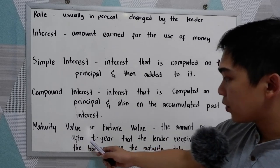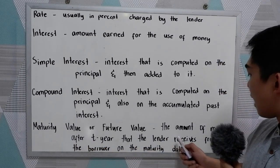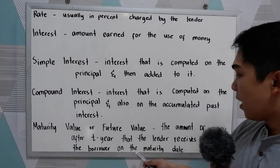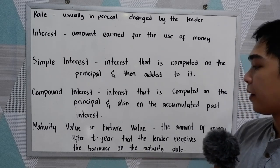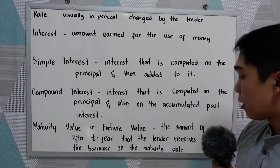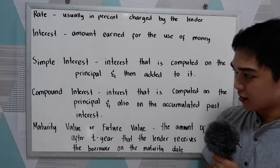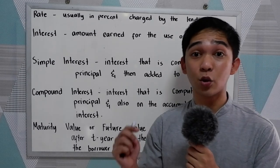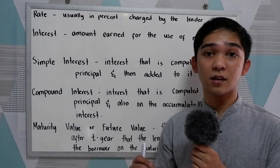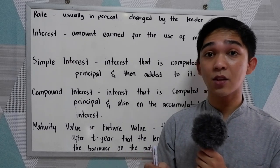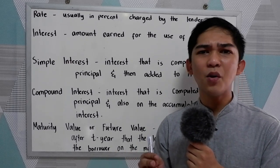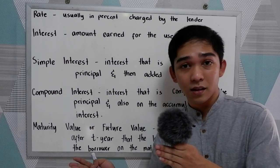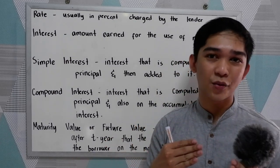Maturity value or future value is the amount of money after the term that the lender receives from the borrower on the maturity date. Those are the terms you will encounter in simple interest and compound interest. Now let us go on to illustrate simple interest and compound interest.